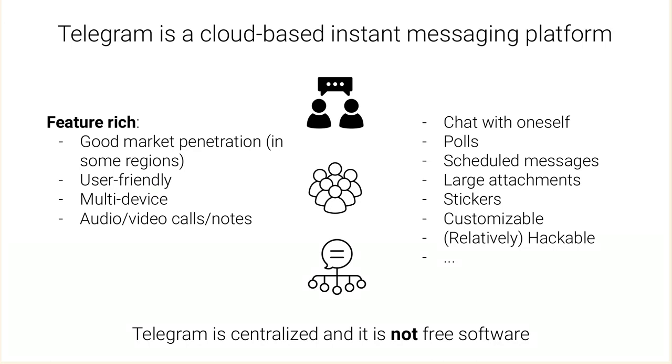The details of the features are not particularly important. What I want to emphasize is that while Telegram is mostly text-based, there's also support for audio, video, calls, and notes. There are also many features you typically find in other instant messaging platforms. You can chat with yourself, make polls, make quizzes, schedule messages, send attachments of any kind — even big ones — and send stickers. Telegram overall is quite customizable, and I would say the platform is hackable. You can expand it with bots, and the clients are open source.